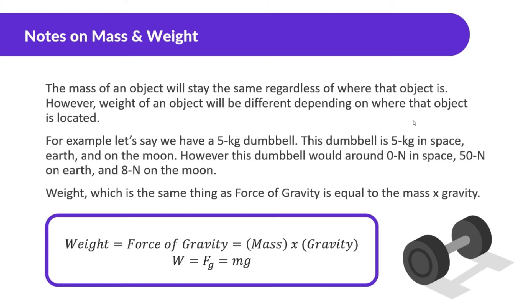Weight — which is the same thing as force of gravity — is equal to mass times gravity. So the formula is: weight equals force of gravity, and force of gravity equals mass times gravity.